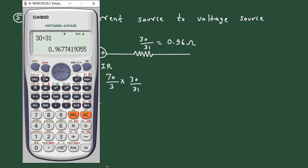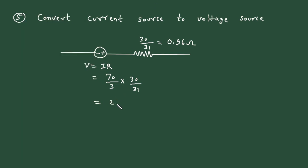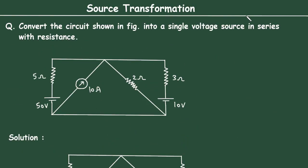So V = 70/3 multiplied by 30/31 = 22.58 volts. Since it is a voltage source, its unit is volts. This is our final circuit — a single voltage source of 22.58V in series with a resistance of 30/31 Ω — which is what was asked in the question.